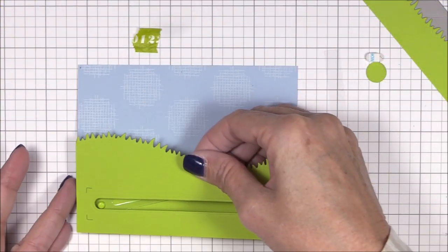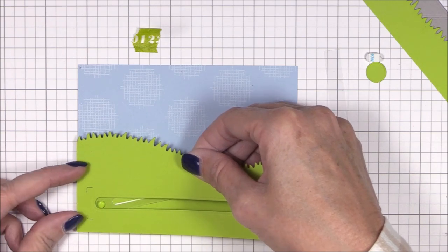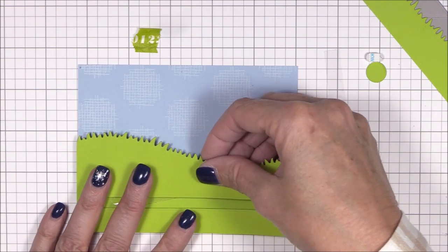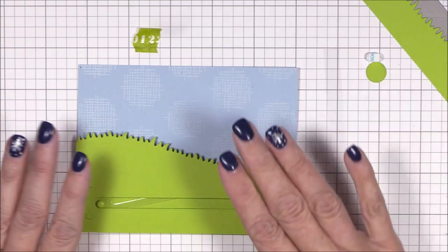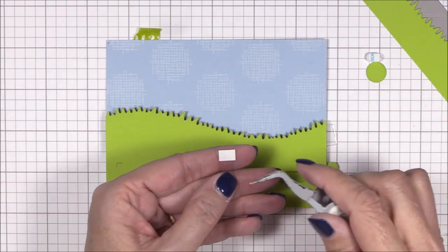Now I can adhere the larger grass panel to the image panel with a double layer of foam squares, being very careful to not place adhesive in any areas that would interfere with the movement of the mechanism.